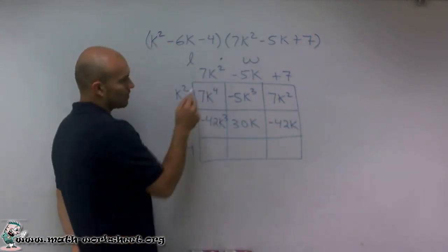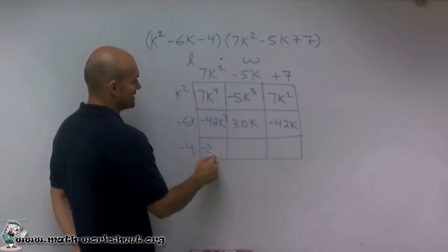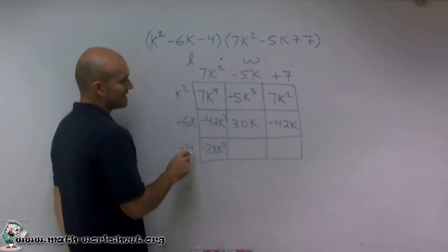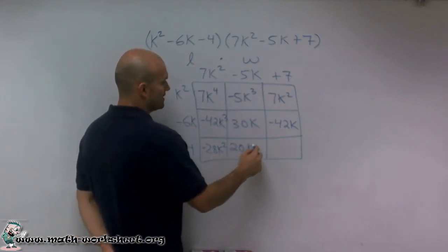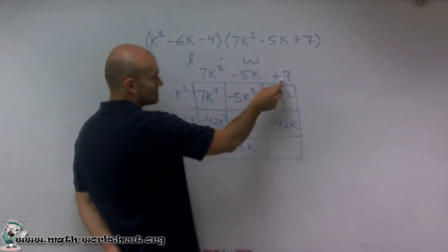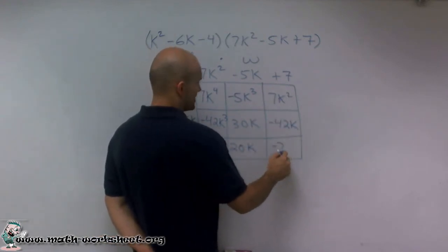Negative 6k times 7k squared is a negative 42k cubed. Negative 6k times negative 5k is 30k squared. Negative 6k times positive 7 is a negative 42k. Negative 4 times positive 7k squared is a negative 28k squared. Negative 4 times negative 5k gives me a positive 20k. And negative 4 times positive 7 gives me a negative 28.